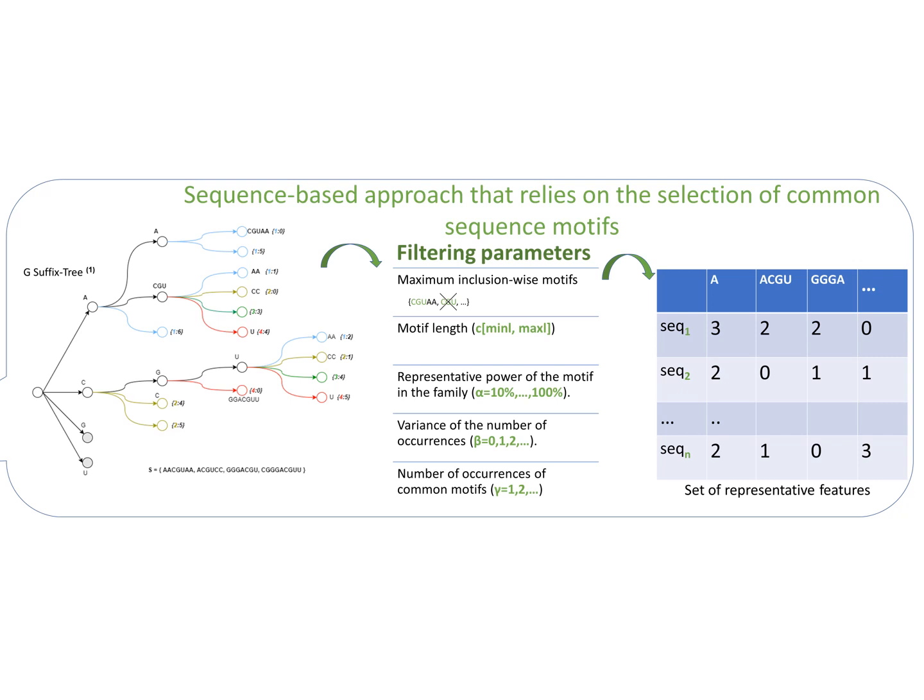Third, the representative power of the motif, which is defined as follows: in how many sequences of the family the motif exists. If we set the threshold, for example, at 10%, this means that the motif must exist at least in 10% of the sequences of the family.